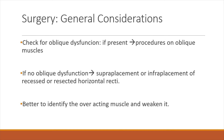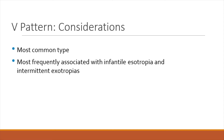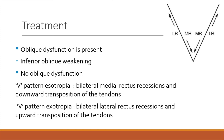Coming to surgery: always check for oblique muscle dysfunction first. If present, perform surgery on the oblique muscles. If there is no oblique muscle dysfunction, then do supraplacement or infraplacement of the recessed or resected horizontal recti. It is definitely better to identify the overacting muscle and weaken it than to strengthen the underacting muscle. For V pattern, the most common type, if there is inferior oblique overaction, you do an inferior oblique weakening procedure — usually a 10-millimeter recession.